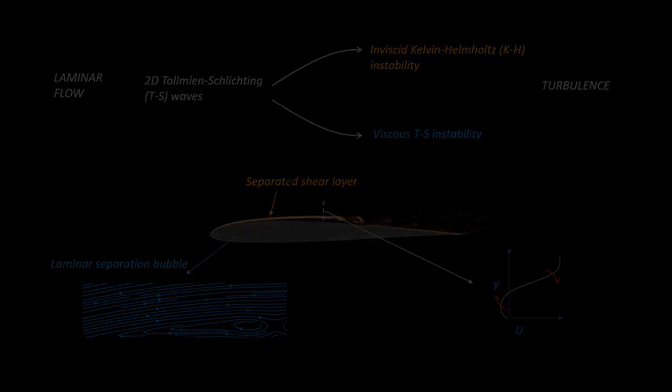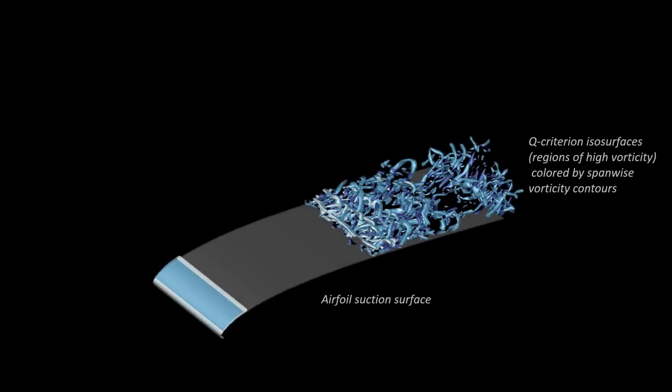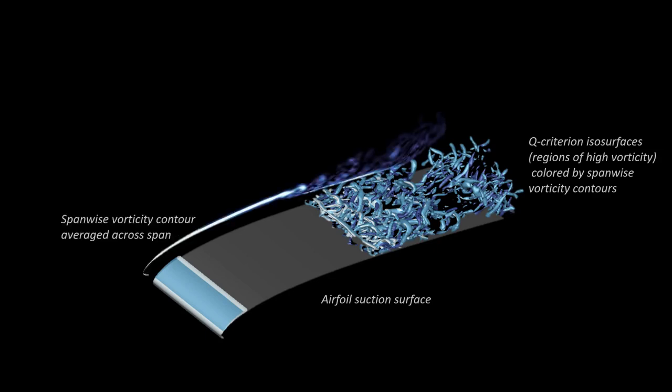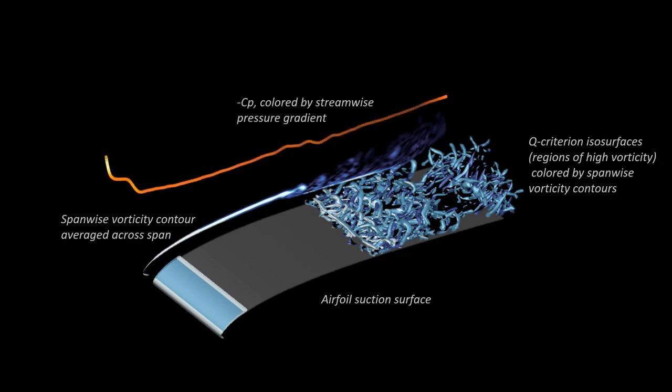The video presentation shows the 3D airfoil suction surface with isosurfaces of the Q criterion representing regions of high vorticity. The isosurfaces are colored by values of span-wise vorticity. On the side, contours of span-wise vorticity averaged across the span are shown. The distribution of the pressure coefficient Cp over the airfoil suction surface colored by the adverse pressure gradient is shown at the top.